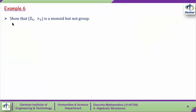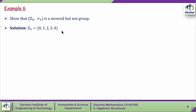Example 6: Show that Z5 with multiplication modulo 5 is a monoid but not a group. For the solution, Z5 = {0, 1, 2, 3, 4}, also written as equivalence classes [0], [1], [2], [3], [4]. We solve this example by using a composition table.